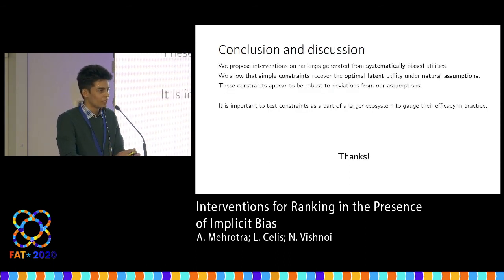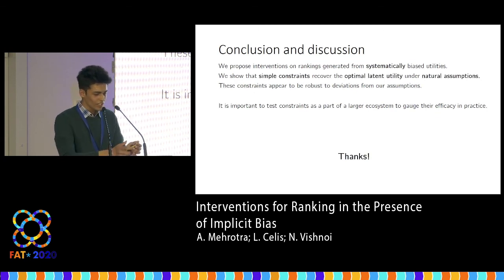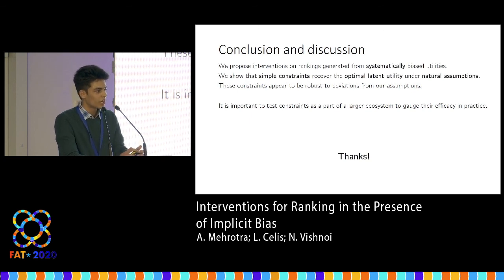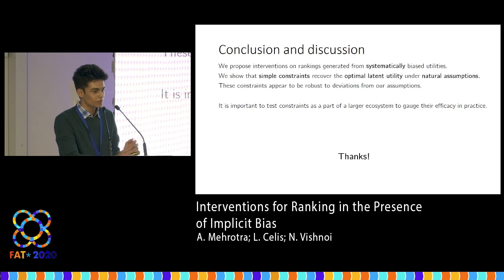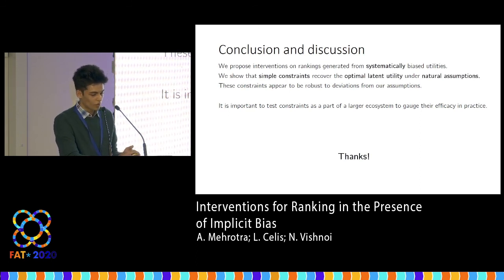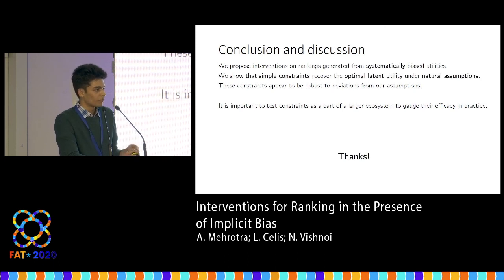In conclusion, we propose interventions to mitigate the adverse effects of implicit bias in ranking. These constraints appear to be robust to deviations from our assumptions, but it's still important to test their performance as part of a larger system so that we can better understand their usefulness in practice. Thank you.